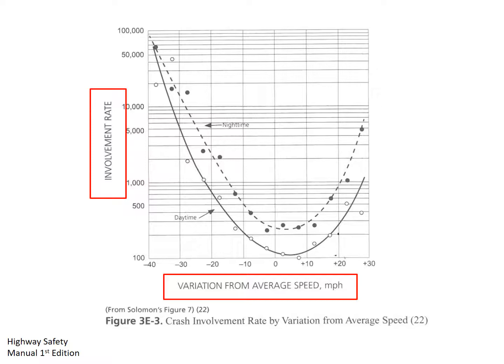There are two curves on this graph. The lower one is the curve for the daytime crashes, and the higher one is for nighttime crashes. The relative location of the nighttime curve shows us that we can expect a higher crash rate during nighttime hours for any speed variation.